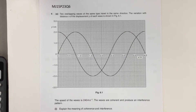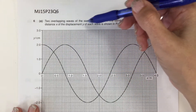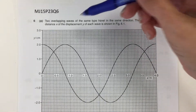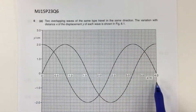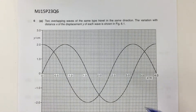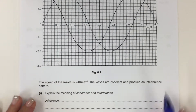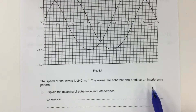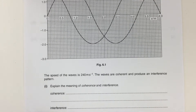This question is about interference between two waves. Two overlapping waves of the same type travel in the same direction. The variation with distance x of the displacement y of each wave is shown in figure 6.1. The speed of the waves is 240 meters per second. The waves are coherent and produce an interference pattern. Explain the meaning of coherence and interference.